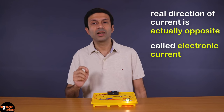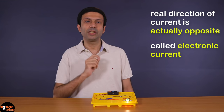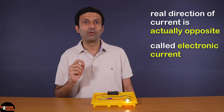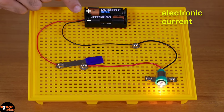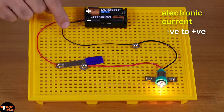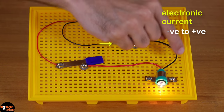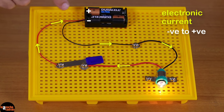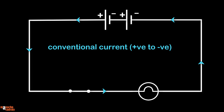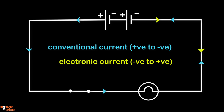The electrons are negatively charged particles and they flow from the negative terminal of the battery through the wires in the circuit and into the positive terminal. This is called electronic current. As you can see in the circuit diagram, it is opposite to the conventional current.